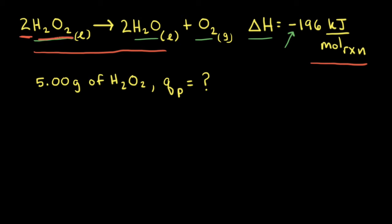two moles of hydrogen peroxide are decomposing to form two moles of water and one mole of oxygen gas. So when two moles of hydrogen peroxide decompose, 196 kilojoules of energy are given off.